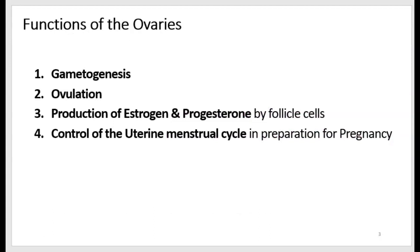The functions of the ovaries include the formation of gametes, or gametogenesis, and then the ovulation of gametes. Ovulation means the release of the gamete from the ovary into the peritoneal cavity, or the abdominal pelvic cavity. The gametes then need to be moved into the uterus for both fertilization as well as implantation of an embryo. Another function of the ovaries is to produce hormones — estrogen and progesterone — secreted by follicle cells.